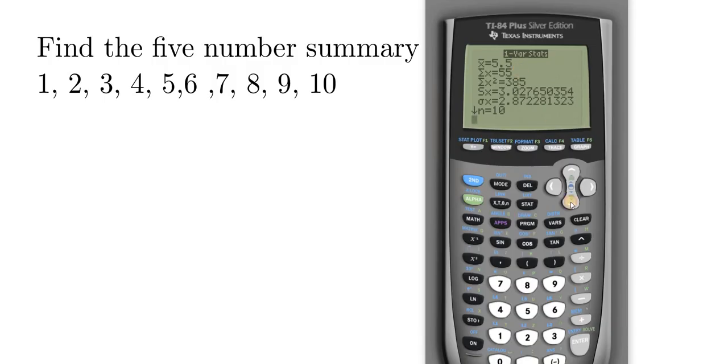And then when you get to this screen, it's really important to remember to scroll down by hitting down. And there you have the min, q1, the median, q3, and the max. That is the five number summary. I hope this video has been helpful. That's it.